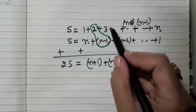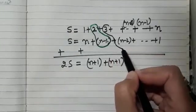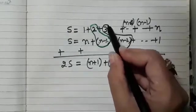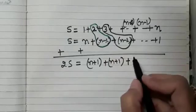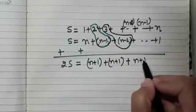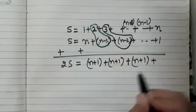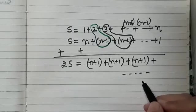Plus. Now consider the third pair. n minus 2 plus 3. What do we get? Very good. We get n plus 1. Similarly, if you keep on adding,